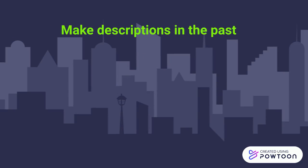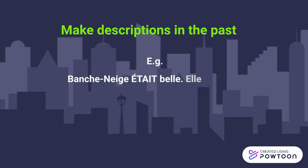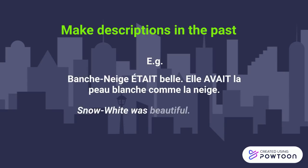Make descriptions in the past. For example: Blanche Neige était belle, elle avait la peau blanche comme la neige. Snow White was beautiful, her skin was as white as snow.